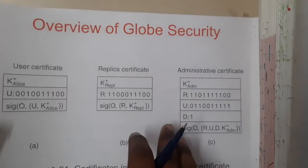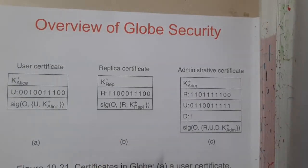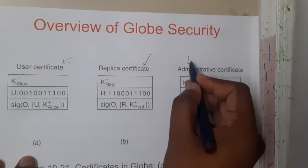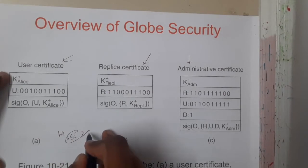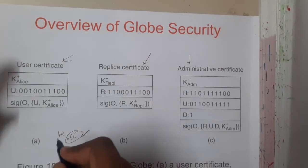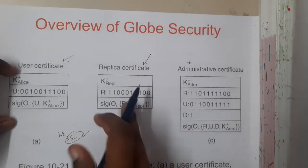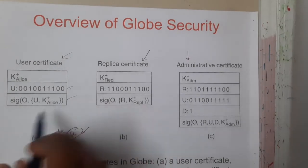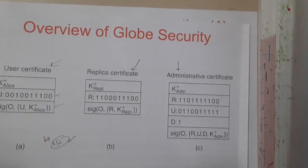Similarly, we have Globe security. Here you will be using user certificates, replicated certificates, and administered certificates. Just like on the web we use SSL — a secured certificate — in the same way you use certificates for users, replicated servers, and administrators. They will each have their own keys and signatures so you can check whether they are original or fake.